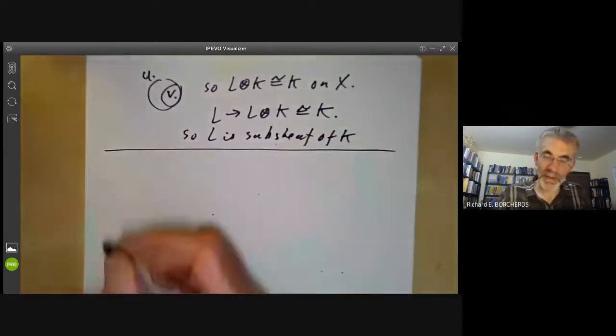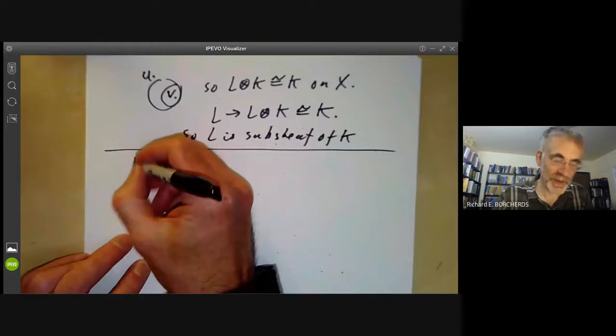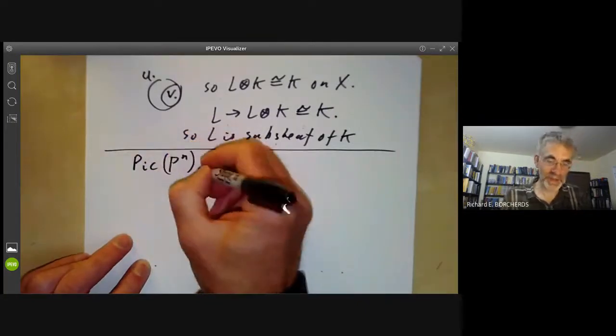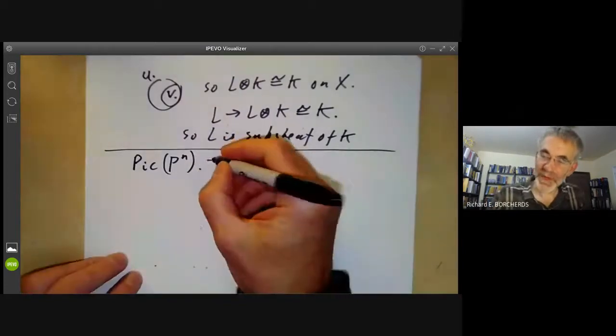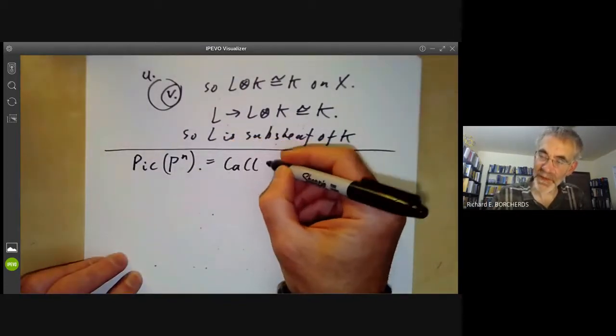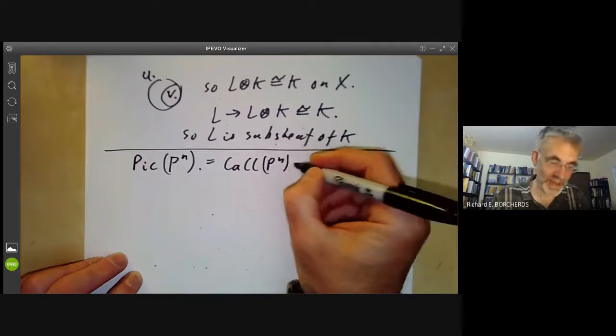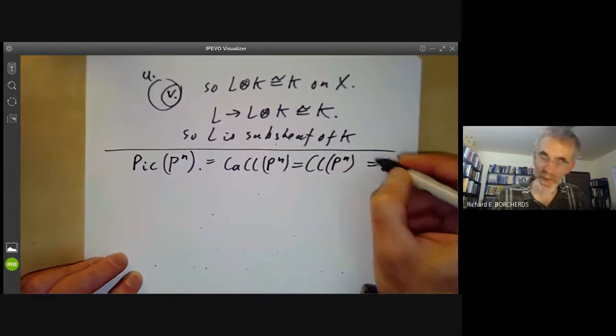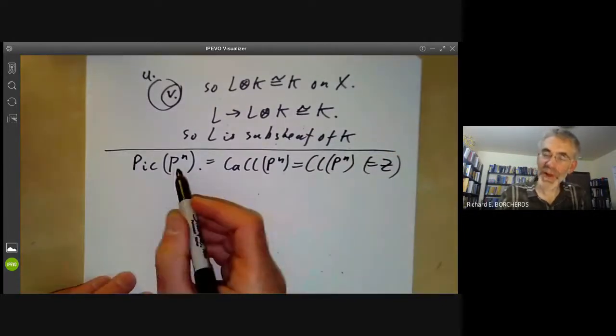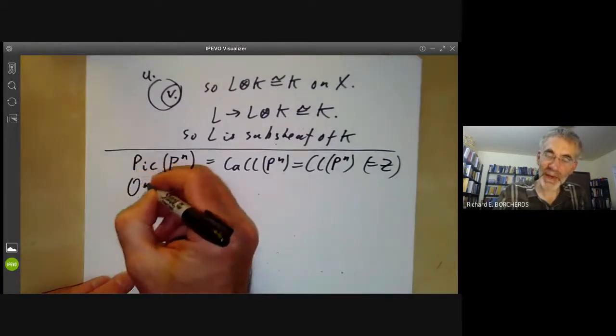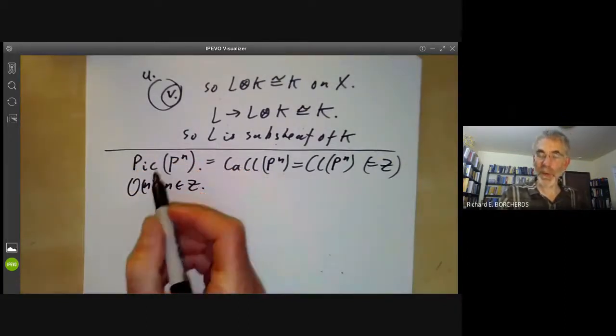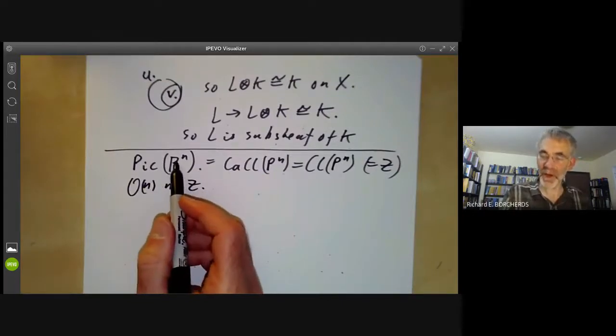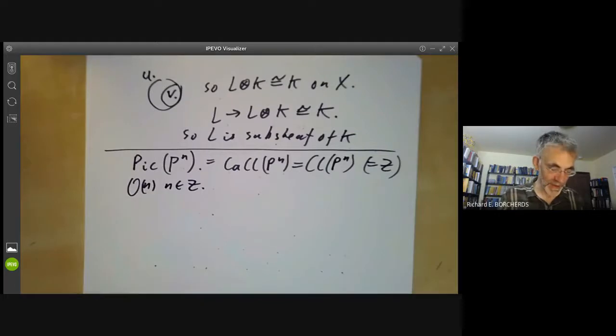To illustrate a bit of this, let's calculate the Picard group of projective space, which as we've seen is the same as the Cartier divisor classes of projective space and is the same as the Weil divisor classes of projective space. We'll see that it's actually isomorphic to Z. You remember we've found line bundles O(N) for N in Z. All we want to do is check that every invertible sheaf on the Picard group is isomorphic to one of these line bundles or invertible sheaves.